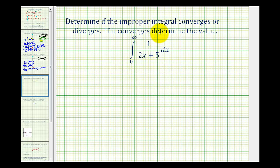We want to determine if the improper integral converges or diverges, and if it converges, we want to determine the value. This is an improper integral because the upper limit of integration is positive infinity.